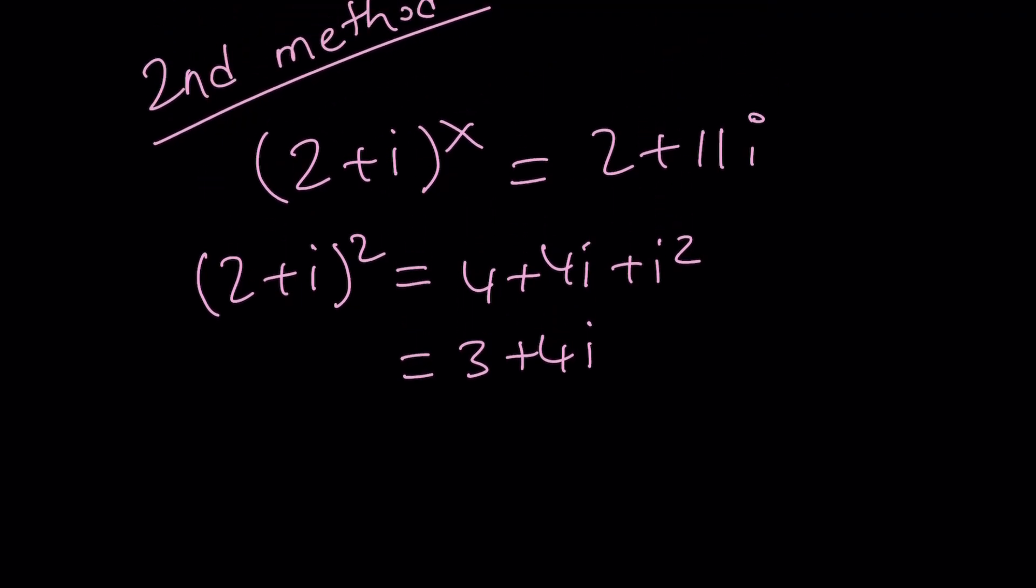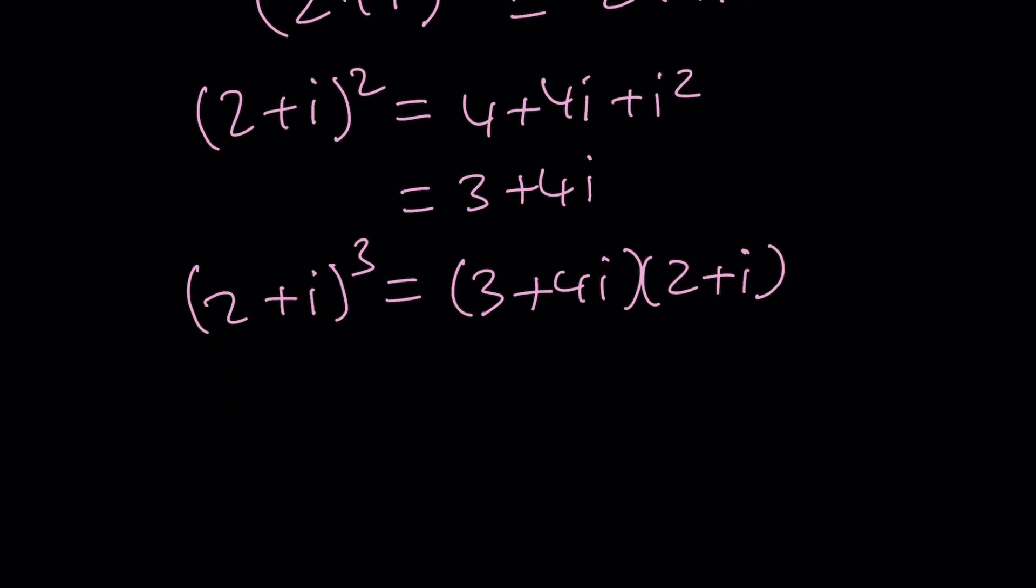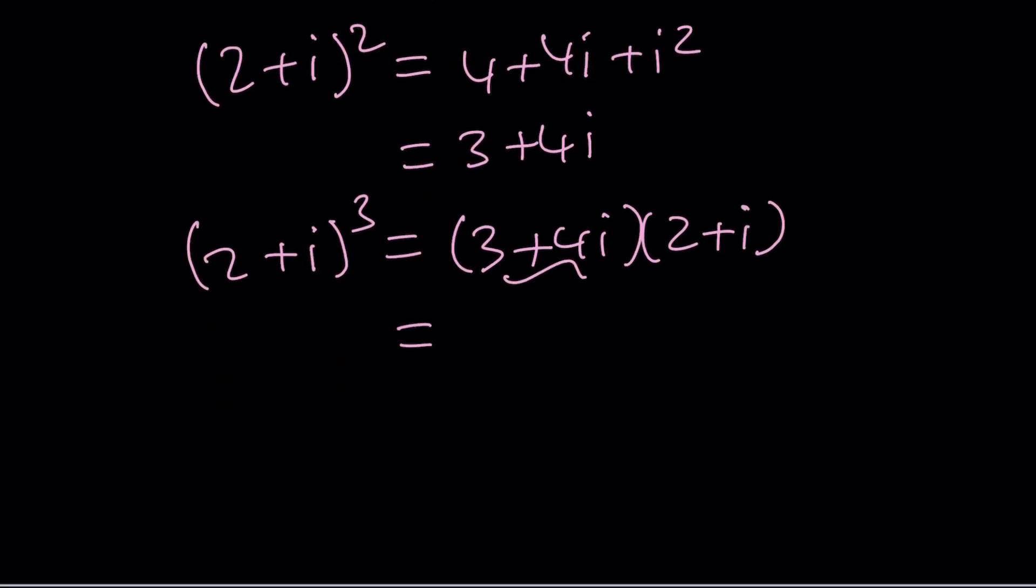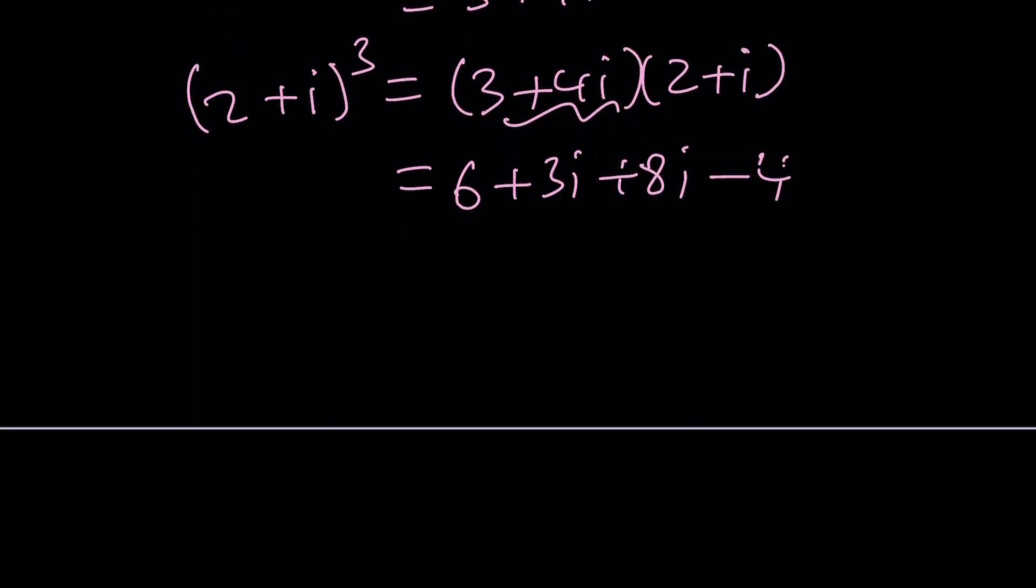And then I want to multiply this. I want to raise 2+i to the third power. So in other words, I want to take the second power and multiply it by 2+i to the first, which is going to give me the cube, right? Because this is the square. So now I get 6+3i+8i+4i squared, which is minus 4. 6 minus 4 is equal to 2. And this is 11i. And yes, I got the number on the right hand side. Of course, this is not a coincidence. I already knew that.